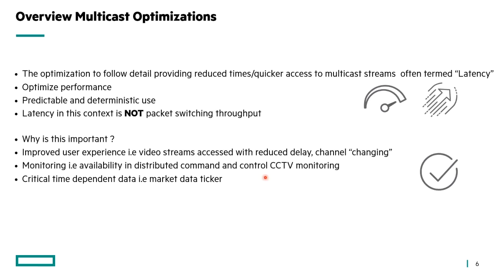So why do I care about this? Why is this important? Well, the first thing is we're going to optimise the performance of multicast in these environments. Multicast is very much a user perspective and they can feel that because they're seeing a stream or interacting with something. So it gives us more predictability and deterministic use of specific applications. When talking about latency in multicast, this is not packet switching throughput — this is really about getting the packet to the user in a timely manner. It's not how many packets per second I can switch.